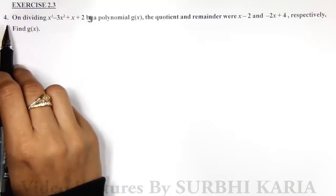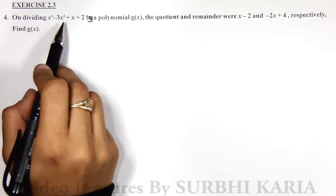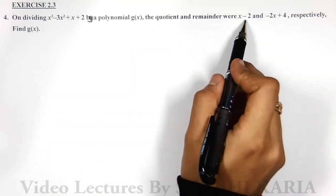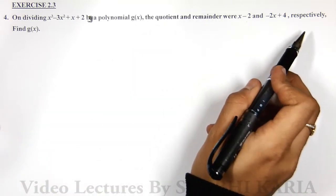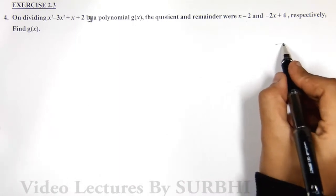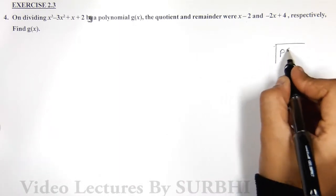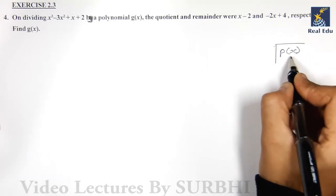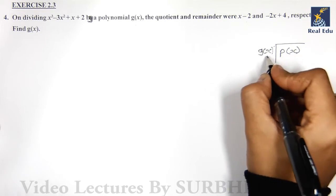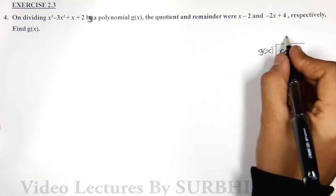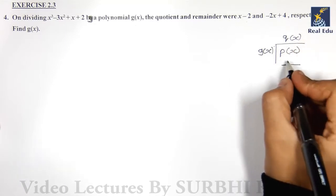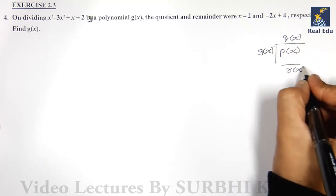This is Section 2.3, question number 4 on dividing a polynomial by g(x). The quotient and the remainder are x minus 2 and minus 2x plus 4 respectively. Find g(x). Here, p(x) is taken inside, g(x) is your divisor taken outside, and what you get on top is always the quotient q(x), and on the bottom after solving is your remainder r(x).